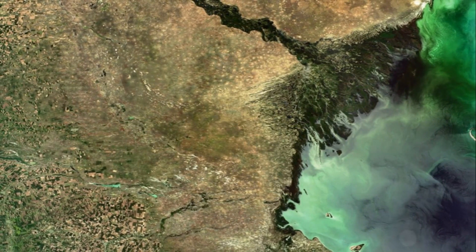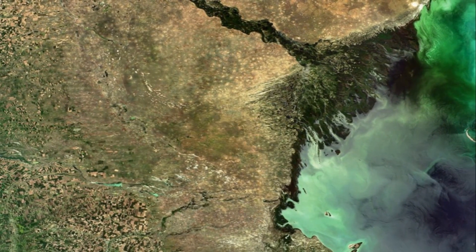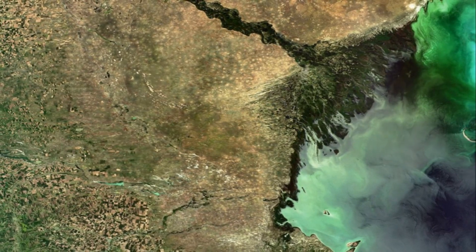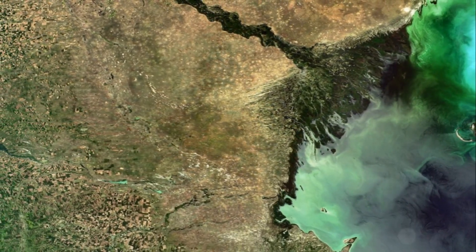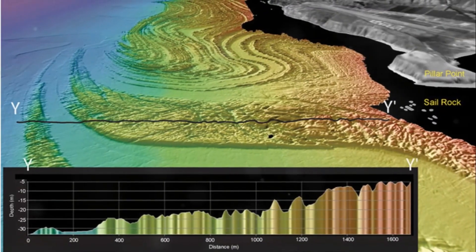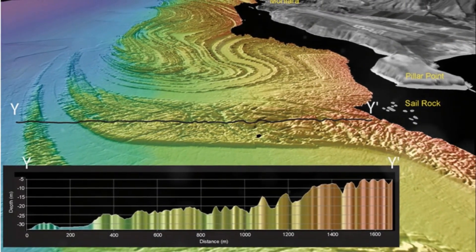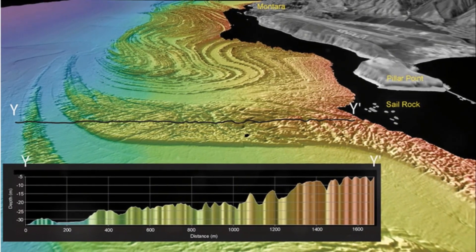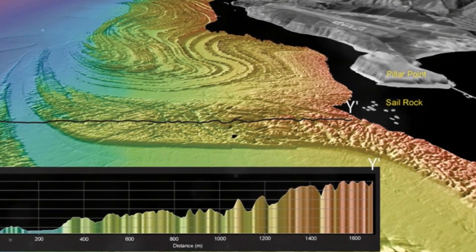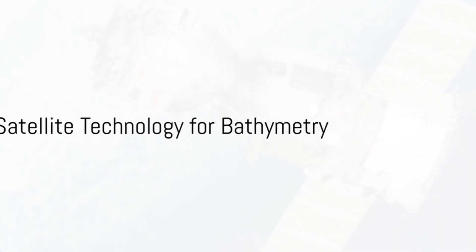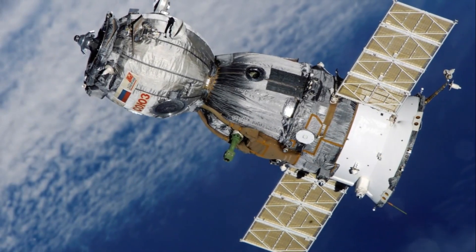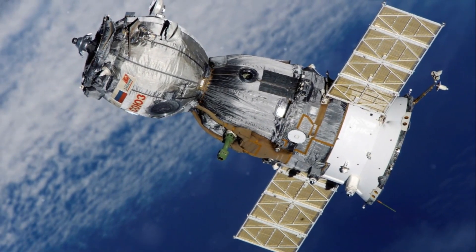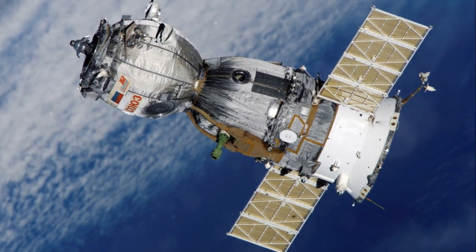The resolution and number of spectral bands used in the data determine the accuracy of the results. Even lower resolution data can provide valuable information. Today, data for SDB is measured from various satellite sources such as Landsat 8, Sentinel-2 and Pleiades.